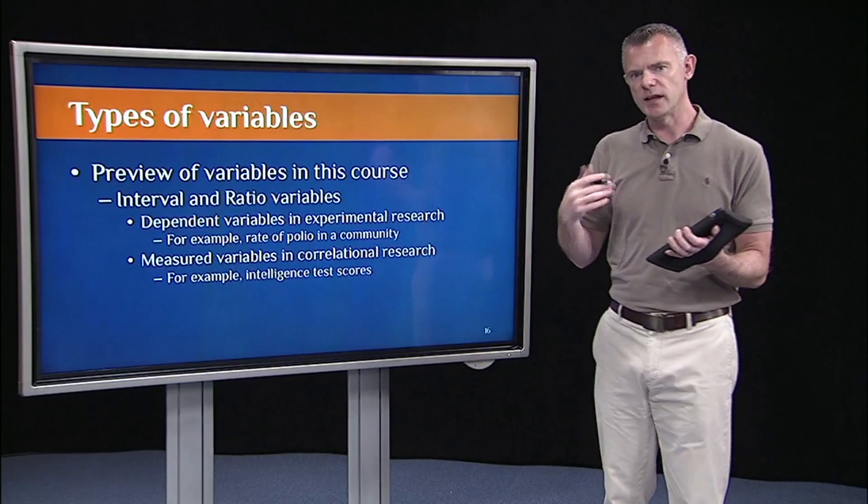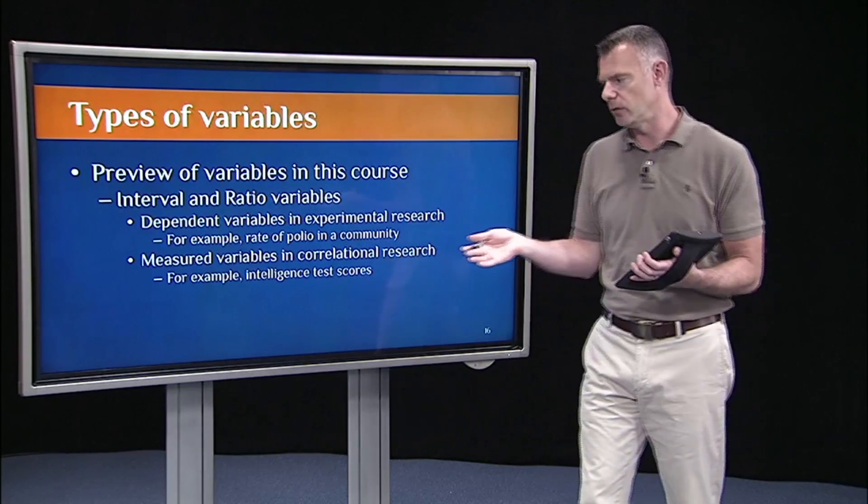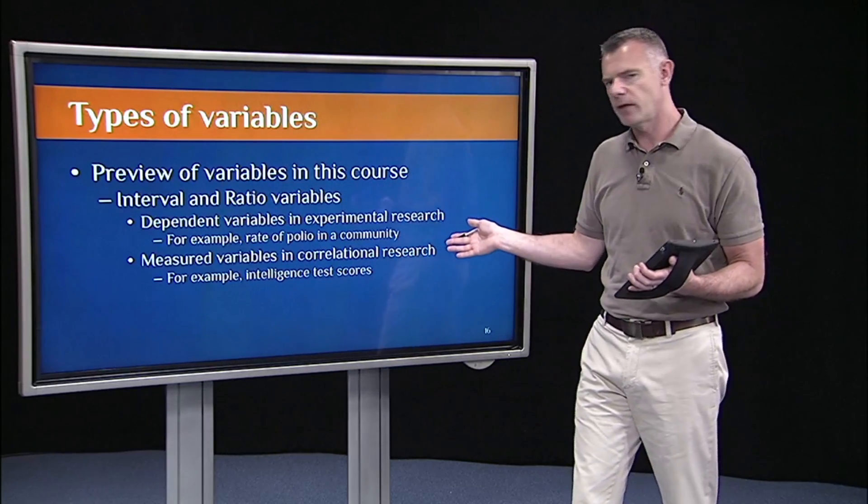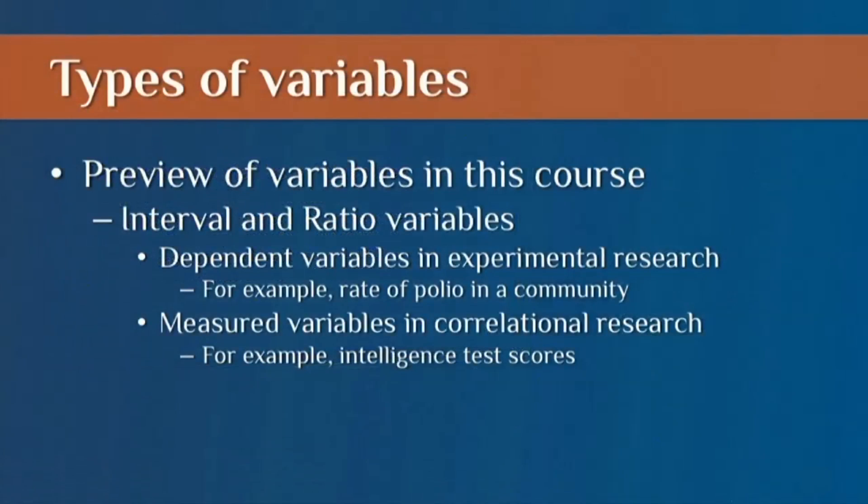We'll typically use interval and ratio variables as our dependent variables or as our measured variables in correlational research. For example, the rate of polio in a community, like how many kids out of a thousand acquired polio after the vaccine, that was our dependent variable.